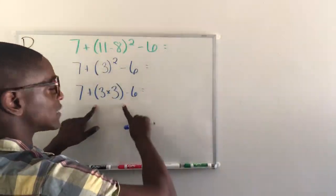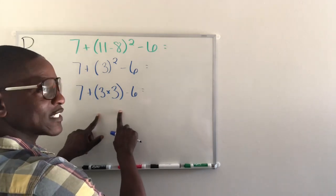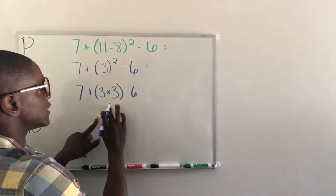So we have seven plus this product inside of these parentheses. So we have to multiply first. So we're going to do three times...